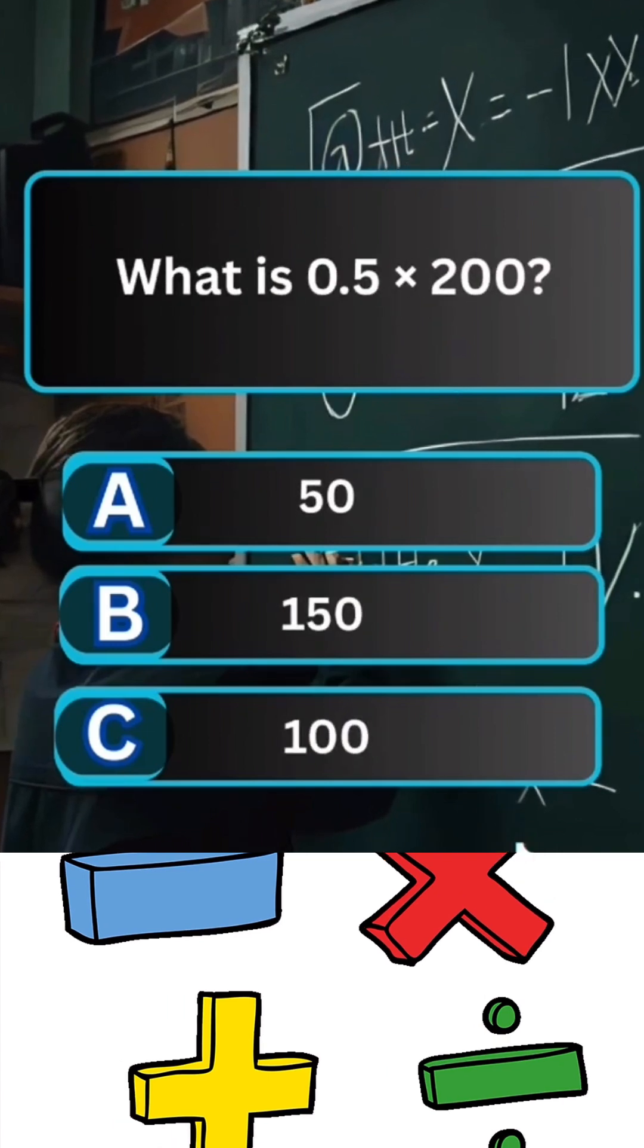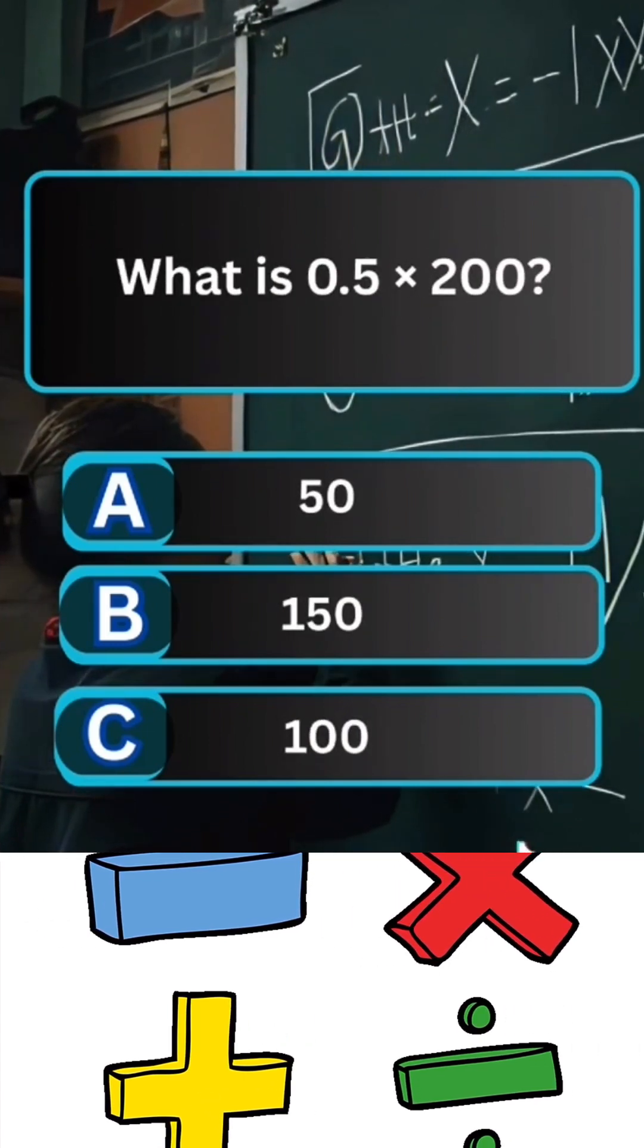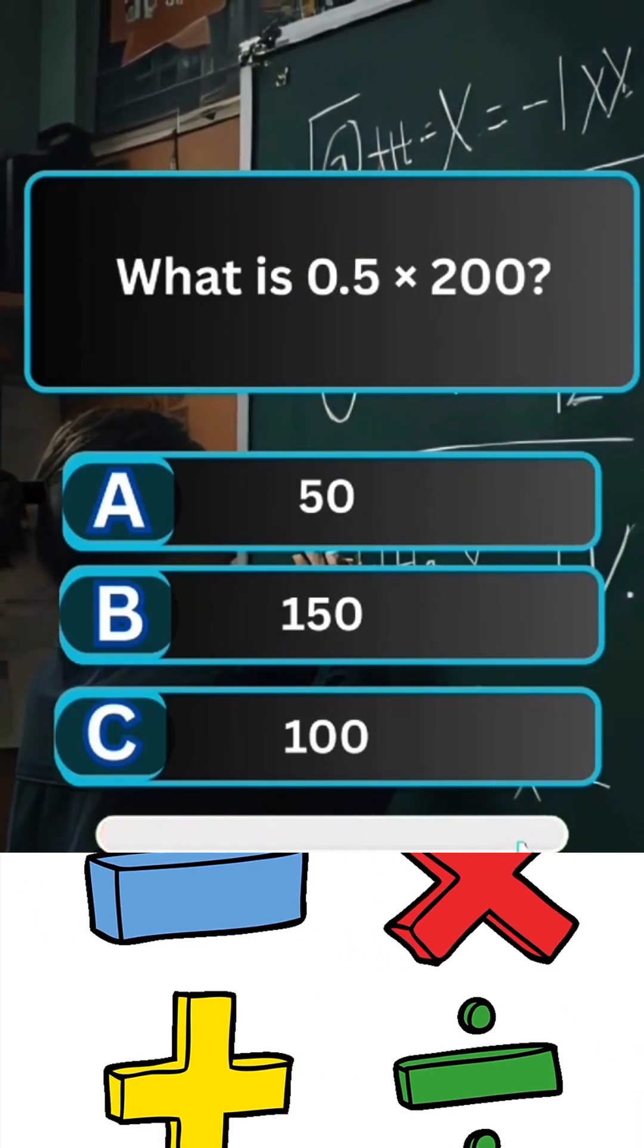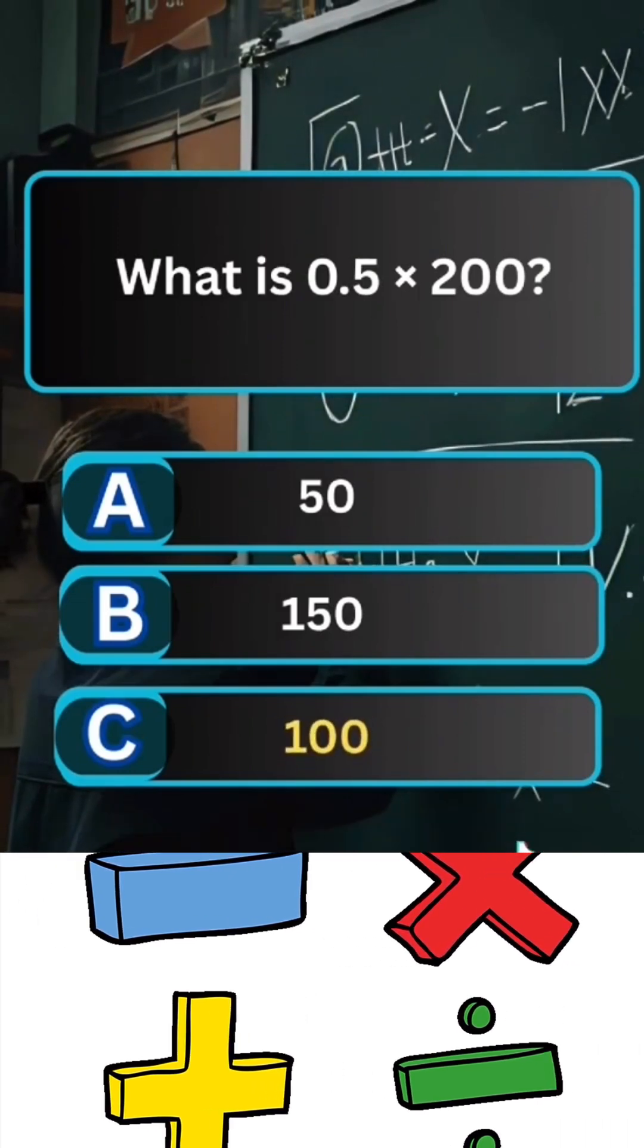Question 4. What is 0.5 multiplied by 200? Answer C. 100.